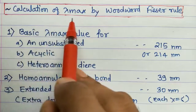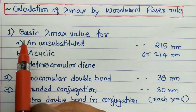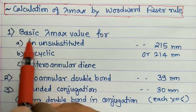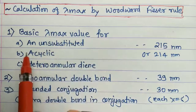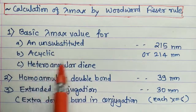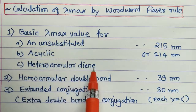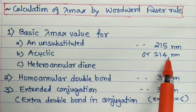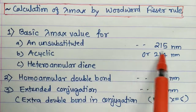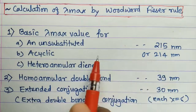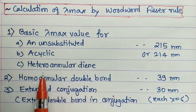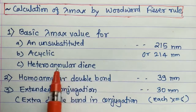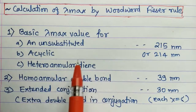The rule consists of five points. First point: the basic lambda max value for an unsubstituted acyclic heteroannular diene is 215 or 214 nanometers — most books consider 214 nm. We'll see what heteroannular means through examples shortly.